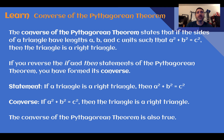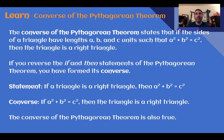Converse of the Pythagorean Theorem. We learned in the last lesson that the Pythagorean Theorem only works for right triangles. So in this lesson, the Converse of the Pythagorean Theorem states that if the sides of a triangle have lengths a, b, and c, and a squared plus b squared equals c squared, then the triangle is a right triangle. Essentially, if the Pythagorean Theorem works for the three sides we're given, then the triangle is a right triangle. A good way to think about this is, if you reverse the if and then statements of the Pythagorean Theorem, then you form the Converse.